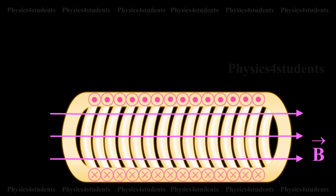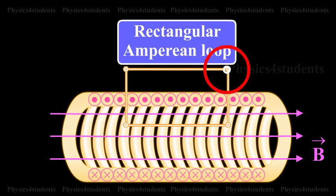To find the magnetic induction B at a point inside the solenoid, let us consider a rectangular amperian loop ABCD.